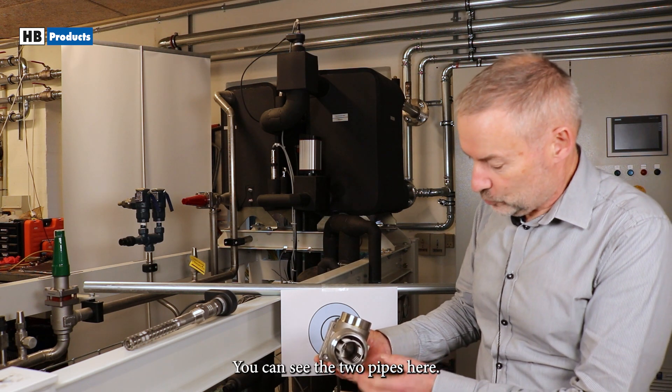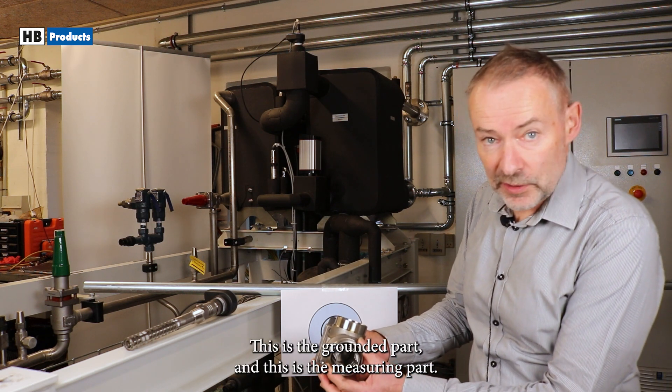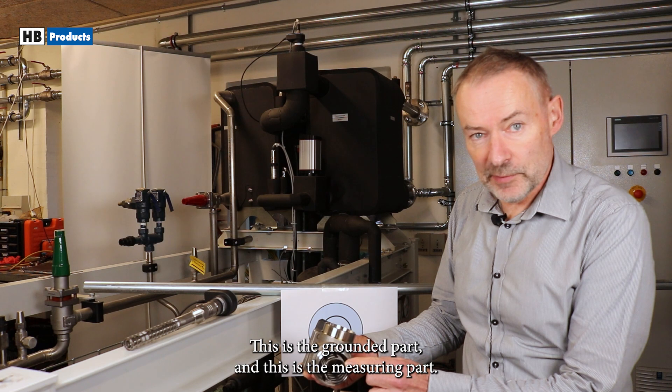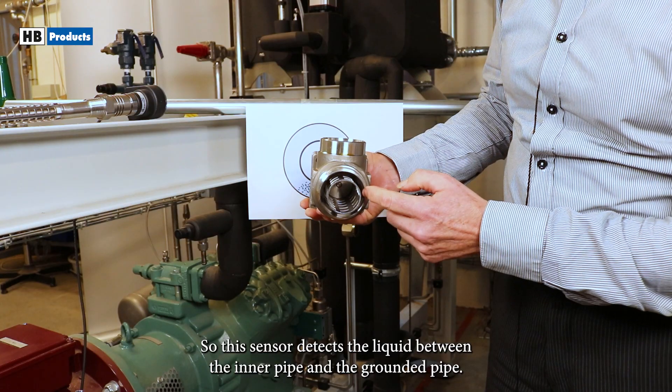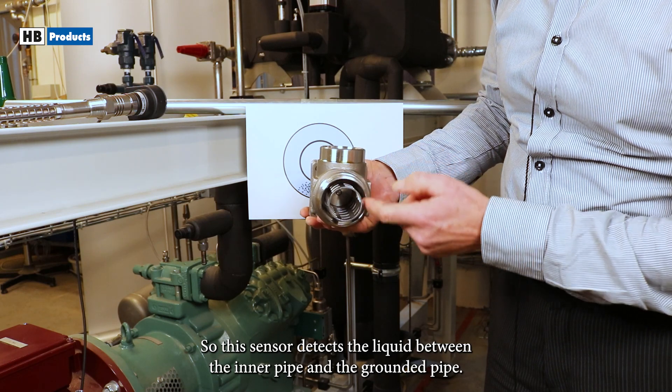You can see the two pipes here. This is the grounded part and this is the measuring part. So this sensor detects the liquid between the inner pipe and the grounded pipe.